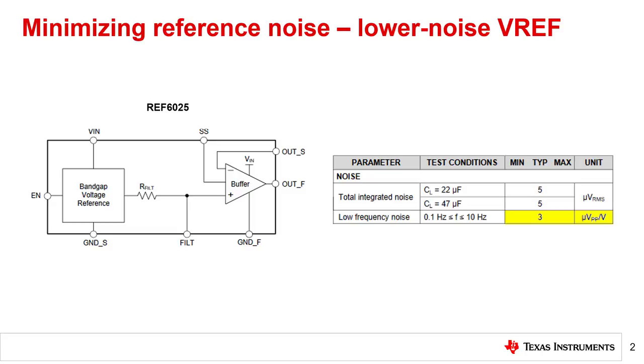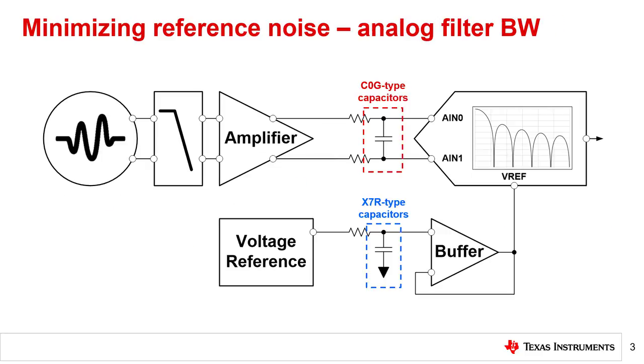Different voltage references will have different specs, so just choosing a reference with minimal low frequency noise may not help your higher bandwidth system, for example. Another method to reduce the amount of reference noise passed into the system is to limit the overall bandwidth seen by the voltage reference.